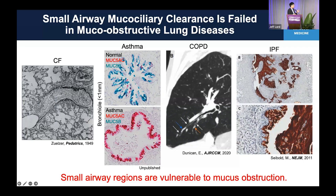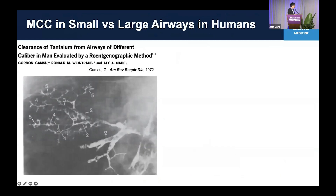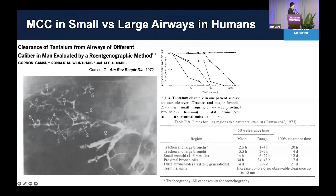These data suggest small airway regions are vulnerable to mucus obstruction. Our question is: why are small airway regions vulnerable? One older paper, published about 50 years ago, tried to measure mucociliary clearance in different regions of airways. The key point of this paper is that from proximal to distal airways, mucociliary clearance is getting progressively slower.